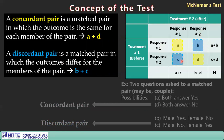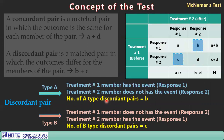Discordant pairs have two types: Type A and Type B. Type A means treatment 1's member has the event (cell b) — event is present for treatment 1 but not for treatment 2. Type B means treatment 2's member has the event (cell c). So the frequency of Type A is b and the frequency of Type B is c.